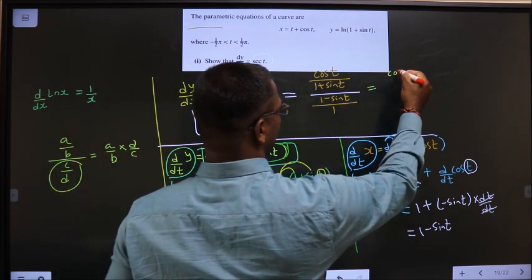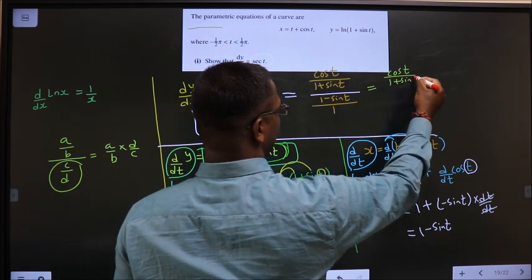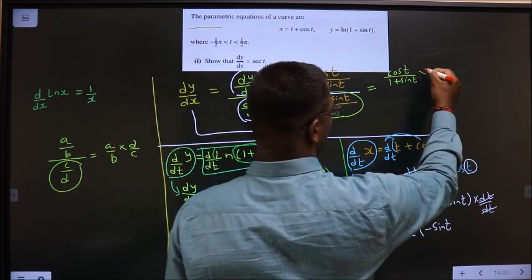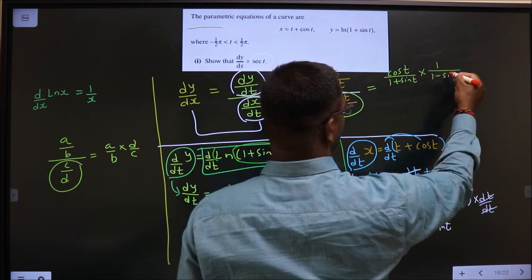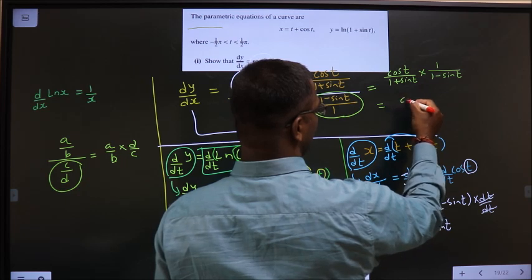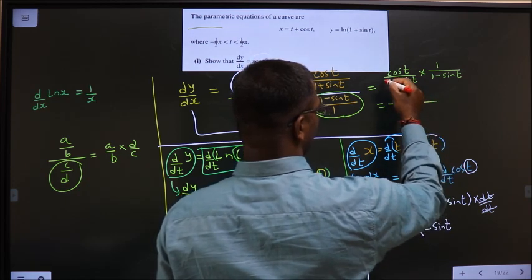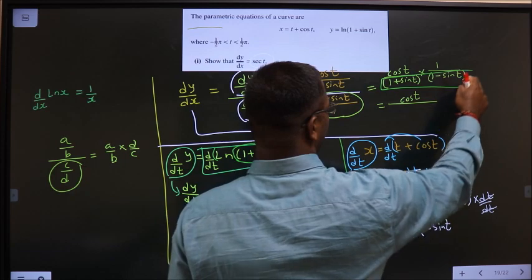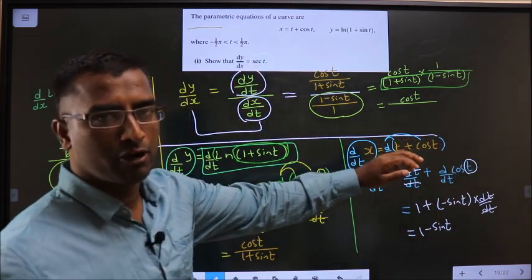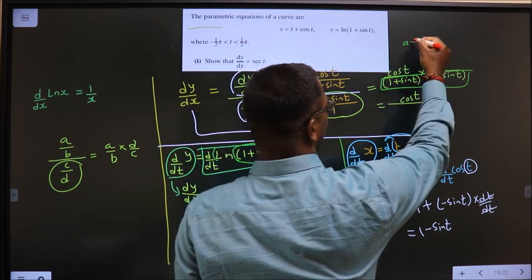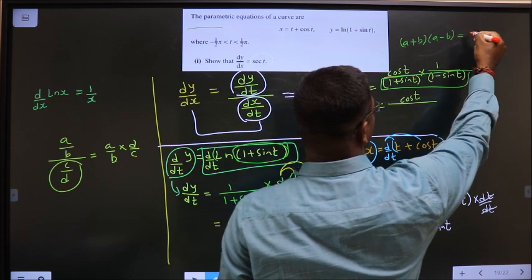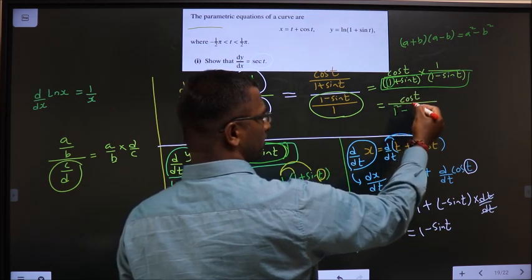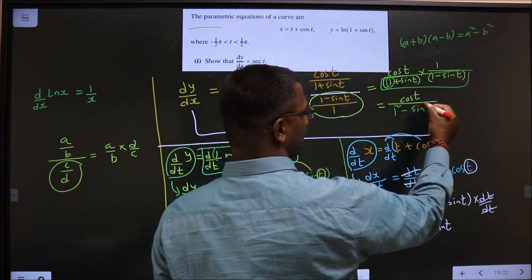So it will become cos t by 1 plus sin t, reciprocal this thing. So it will become into 1 by 1 minus sin t. So now what do you get, cos t by 1 plus sin t into 1 minus sin t. What will you get for this one? When you are looking at it, it is of which form? It is of a plus b into a minus b form. And the formula is a square minus b square. In place of a you have 1, so 1 square minus in place of b it is sin, so sin square t.